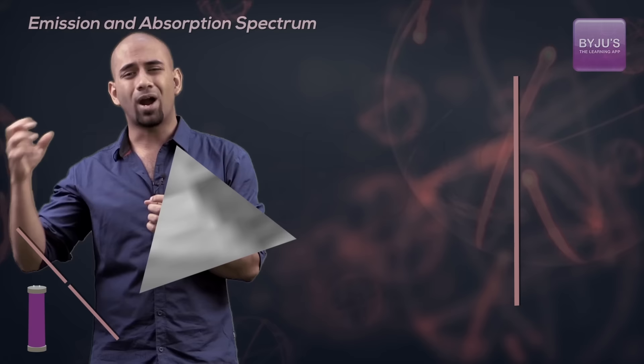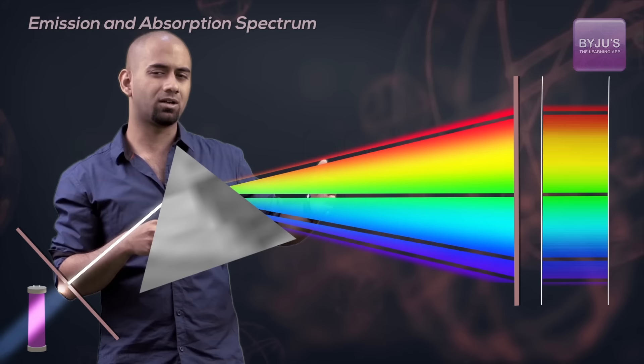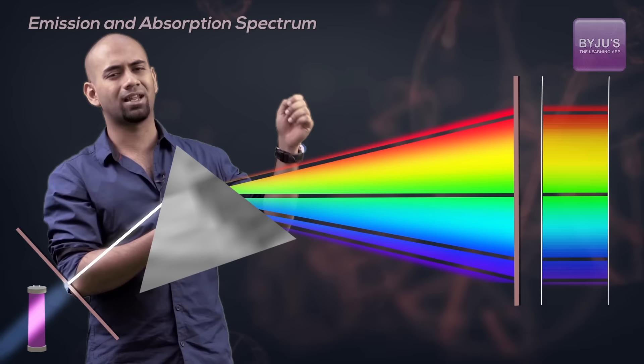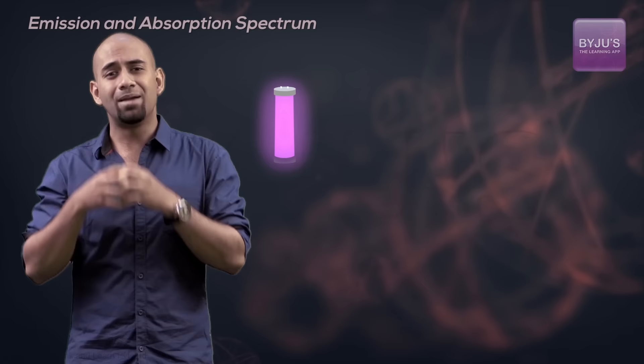Also it was found that when white light was shined through this element, the spectrum that was observed did not have a few frequencies, or there were a few dark lines. And these dark lines corresponded exactly with the spectral lines that we saw in the previous case.